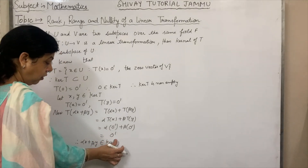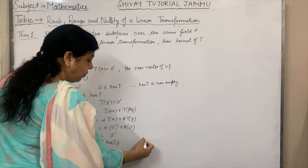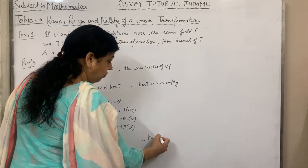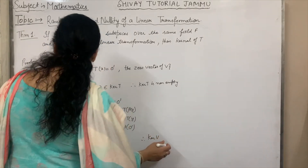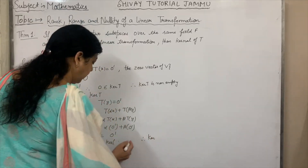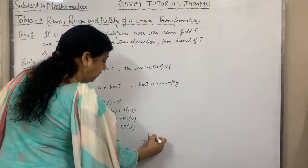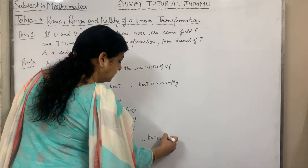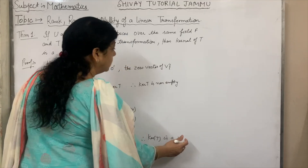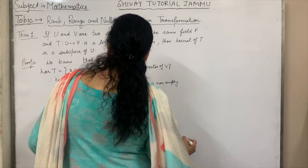We get that αX + βY belongs to kernel of T. Therefore, kernel of T is a vector subspace of U.